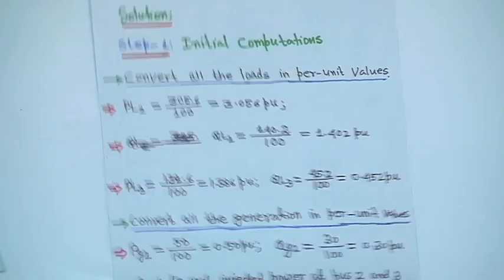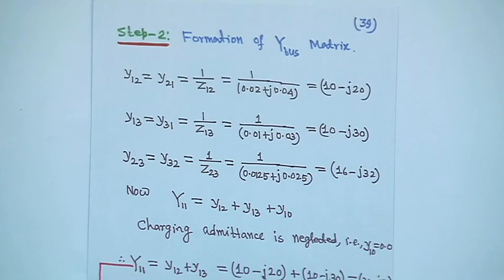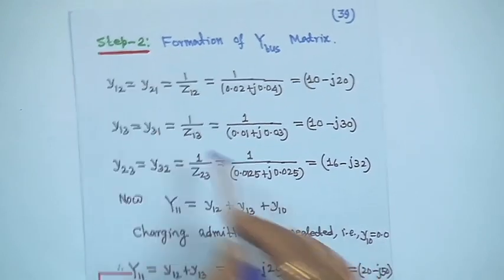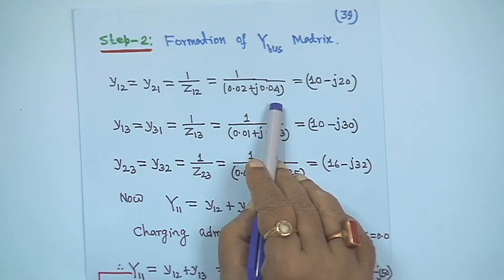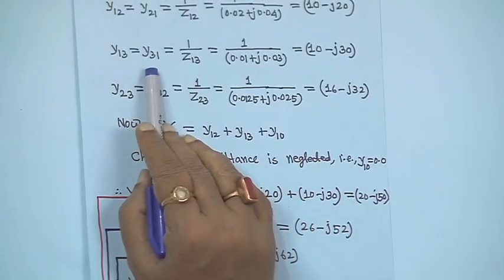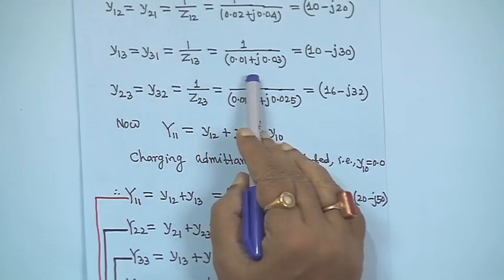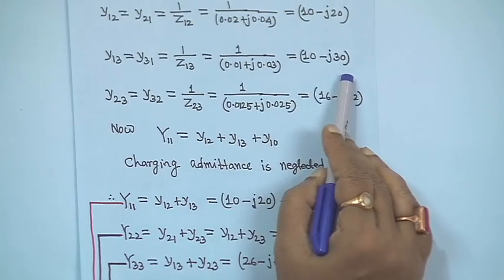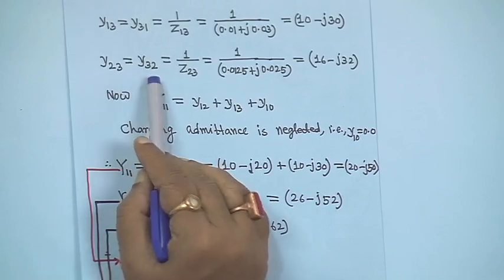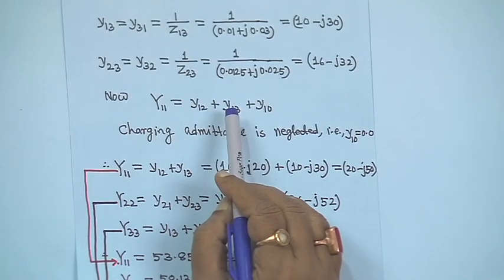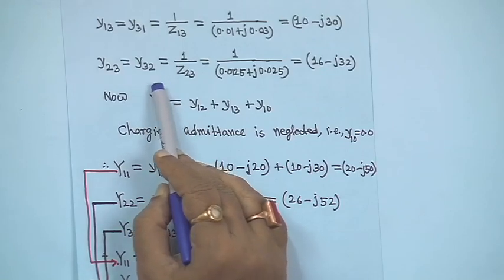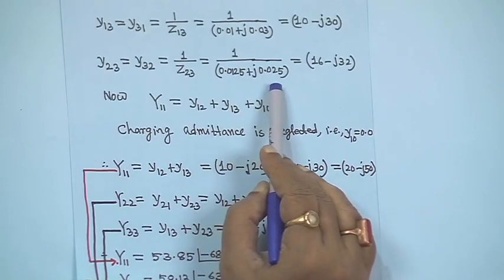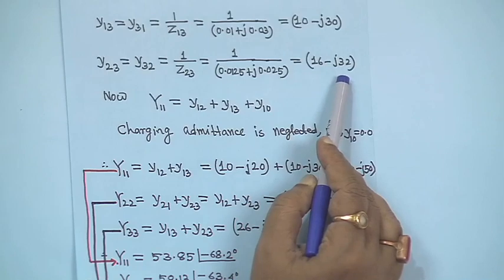Step 2: Formation of the Y-bus matrix. All impedance values z_ik are given, so first compute the line admittances. Small y12 = y21 = 1/z12 = 1/(0.02 + j0.04) = 10 − j20. Small y13 = y31 = 1/(0.01 + j0.03) = 10 − j30. Small y23 = y32 = 1/(0.0125 + j0.025) = 16 − j32. Note: do not confuse capital Y (Y-bus elements) with small y (line admittances).